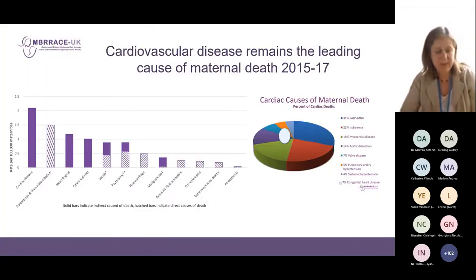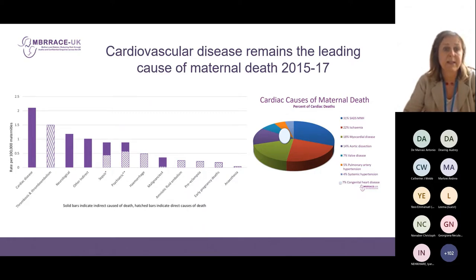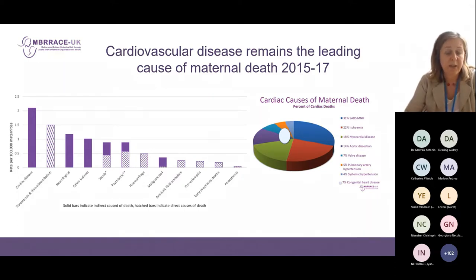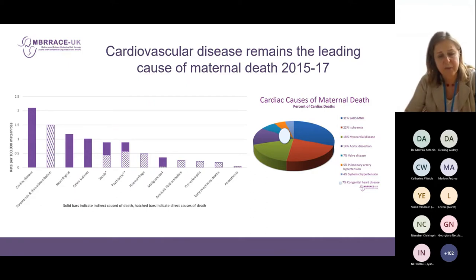It's worth spending a second thinking about why we're talking about this. Cardiovascular disease remains the leading cause of maternal death in the UK, and a significant proportion are inherited cardiac conditions. We usually have between 10 and 15 percent of deaths caused by aortic dissection and around 20 percent by myocardial disease, predominantly cardiomyopathy. We're very fortunate in the UK that we have a low maternal death rate, but some of it is still preventable. Deaths are the tip of the iceberg and there is a larger amount of morbidity underneath.